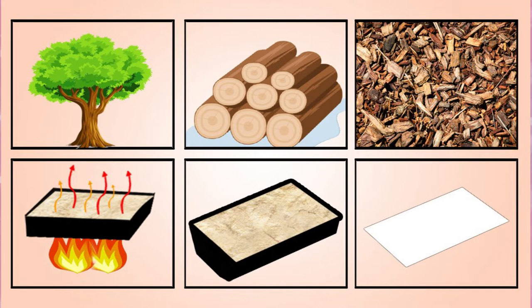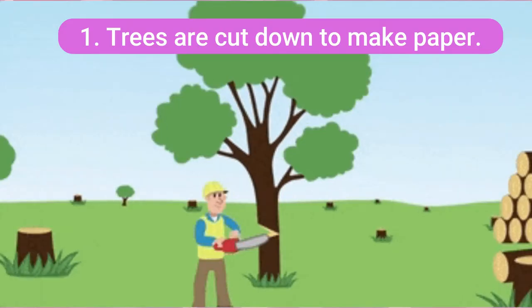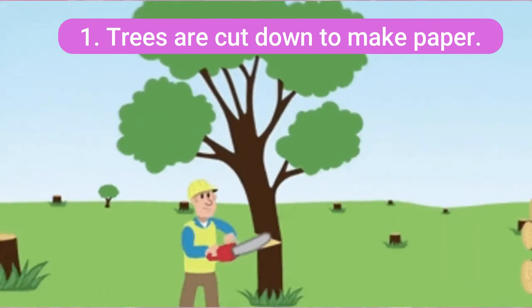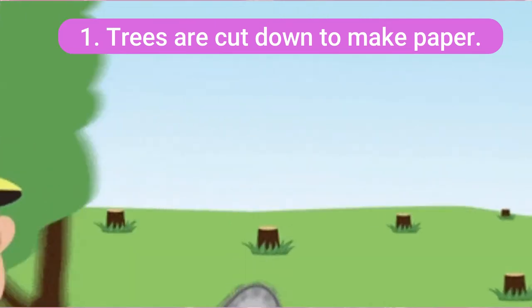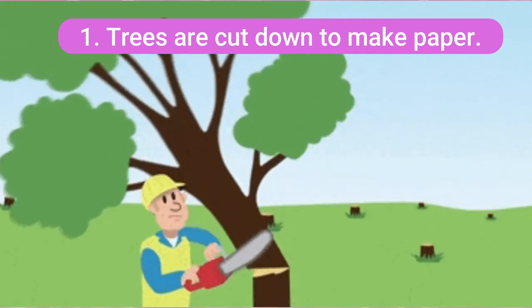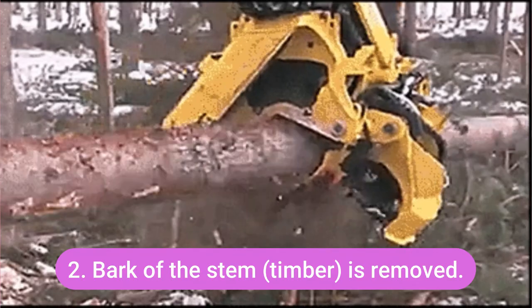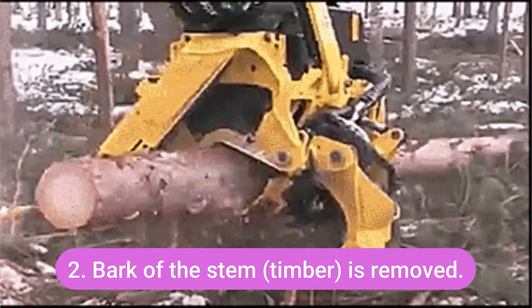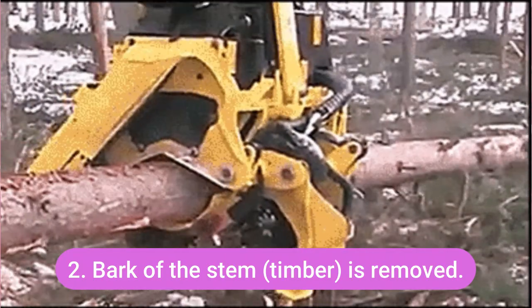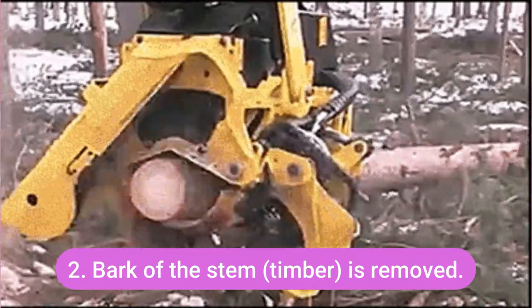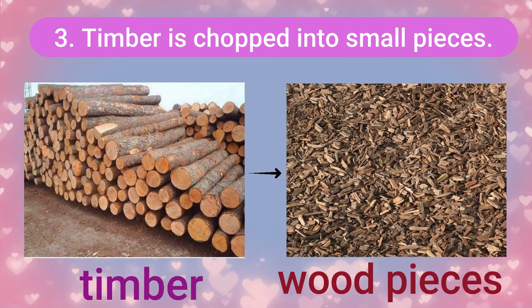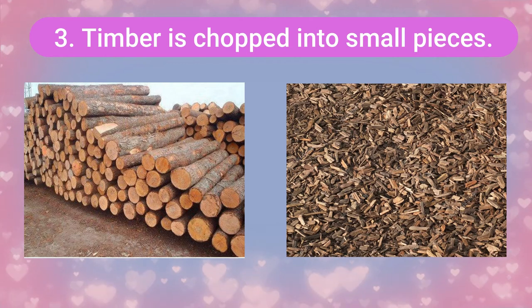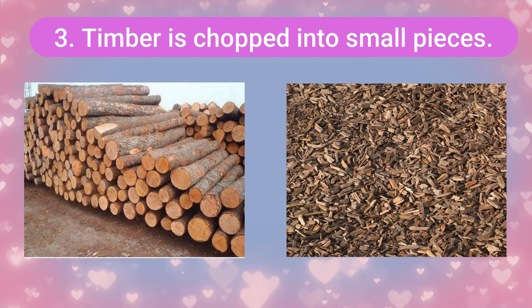Step by step, here is how paper is made from trees. First step: trees are cut down in large numbers. Second step: the bark of the stem is removed. Third step: the stem or timber is chopped into small pieces.